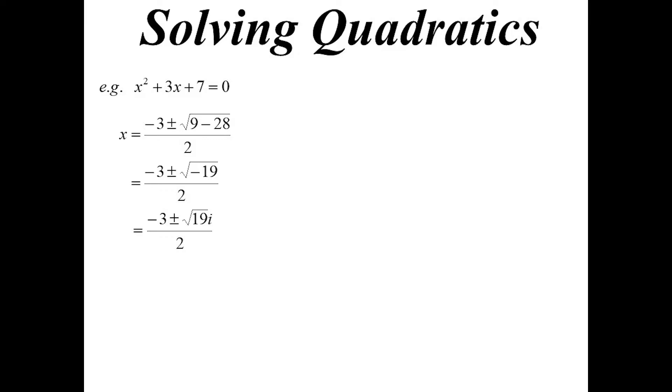So we now have root 19i. Some people, when we're dealing with surds like this, put the i at the front so there's no confusion. It doesn't look like I'm saying the square root of 19i. Make it clear that it's not under the square root sign.